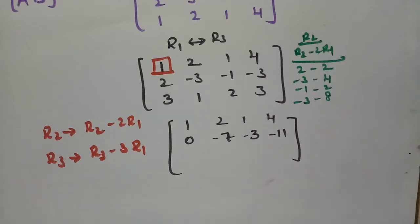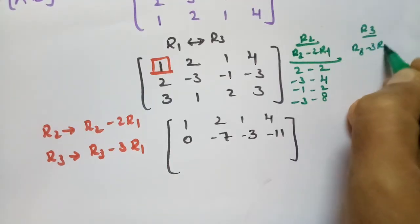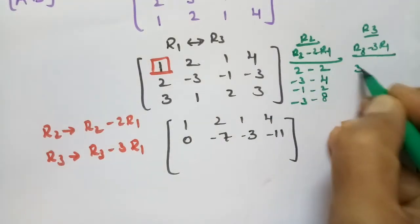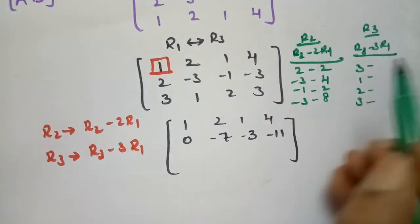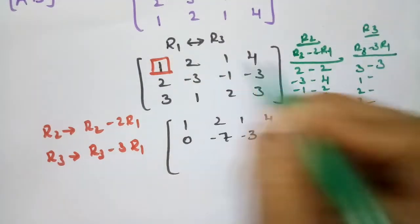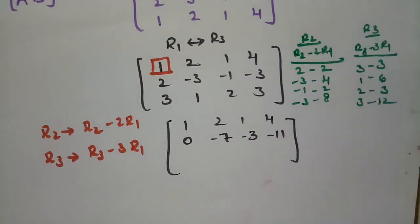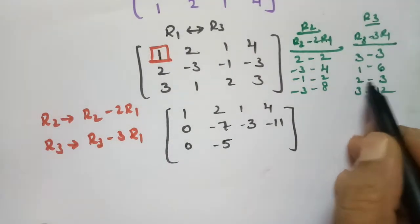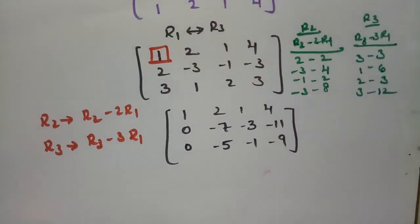For row 3, the operation is R3 minus 3·R1. Row 3 is 3, 1, 2, 3, and we subtract 3 times row 1 (which is 3, 6, 3, 12). This gives: 3 minus 3 = 0, 1 minus 6 = minus 5, 2 minus 3 = minus 1, and 3 minus 12 = minus 9.